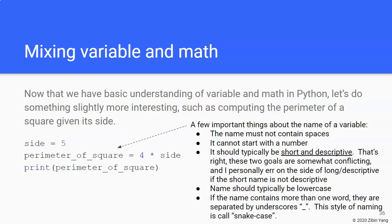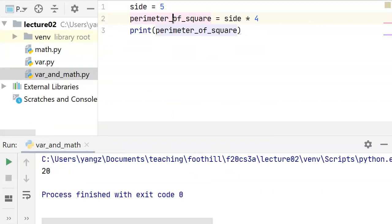So a few things I'd like to point out about the name of a variable that we haven't talked about previously. The first thing is the name must not contain spaces. So if you just want to say perimeter of square, well Python is going to be not very happy because these become separate entities.